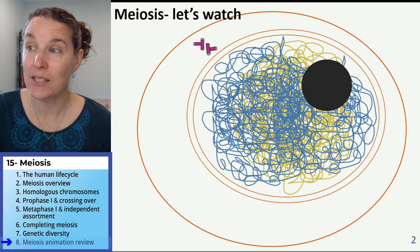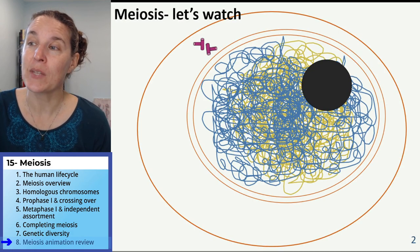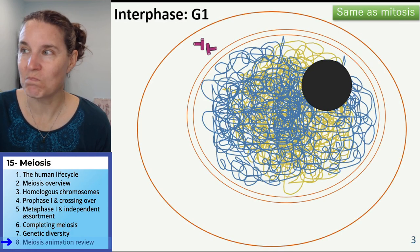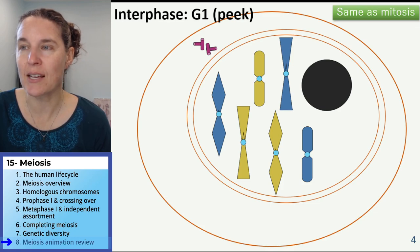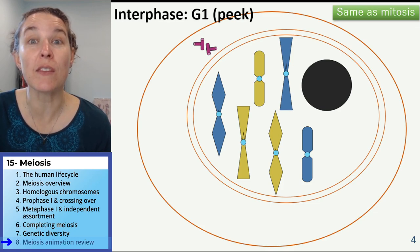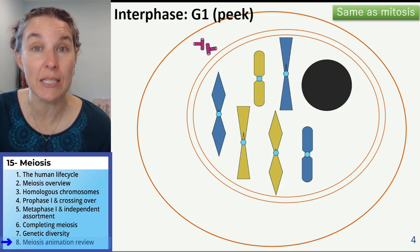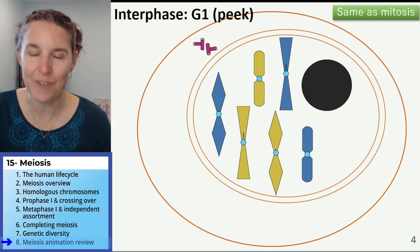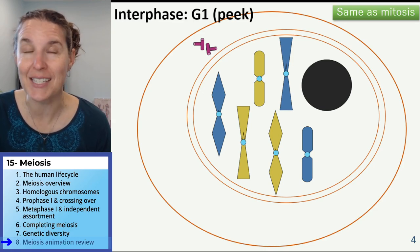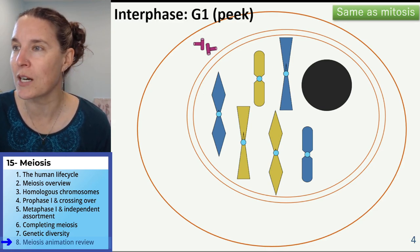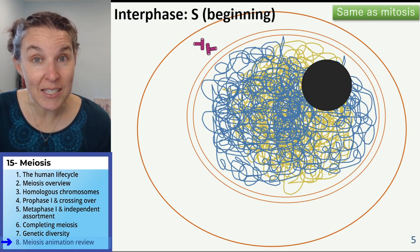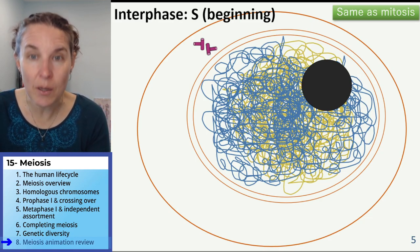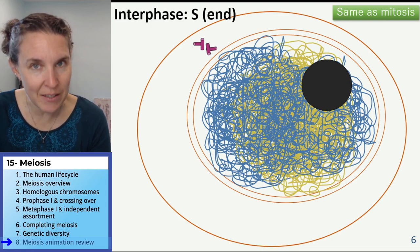Interphase — no problem, same as mitosis, it's exactly the same. G1: you can't tell a difference, but the chromosomes do not have sisters in G1. You can find your homologues and practice identifying homologues. At the beginning of S phase we have a certain amount of DNA.